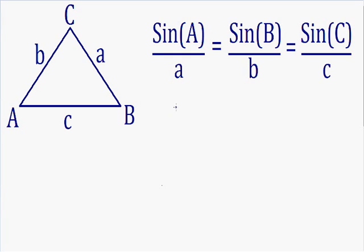I wrote the equation for you for the law of sines in the top right hand part of the screen. It says the sine of angle A divided by the length of side A is equal to the sine of angle B divided by the length of side B, and that is also equal to the sine of angle C divided by the length of side C. I drew a picture on the left with angles in uppercase letters and the lengths of the sides in lowercase letters.